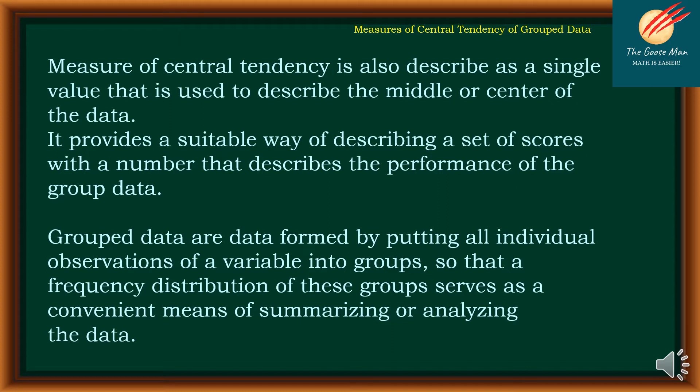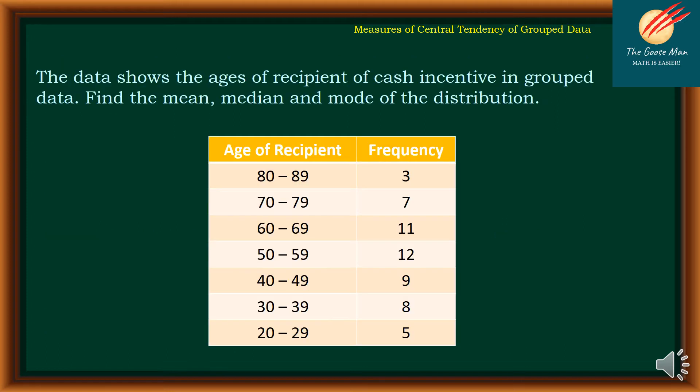The frequency distribution of these groups serves as a convenient means of summarizing or analyzing the data. To illustrate the measures of central tendency of grouped data, let's consider data showing the ages of recipients of a cash incentive. We will find the mean, median, and mode of the distribution.